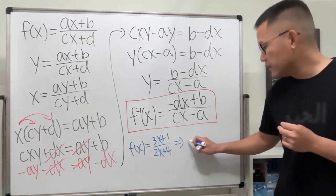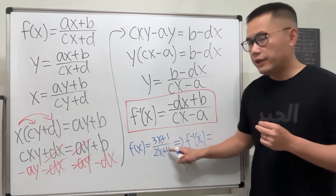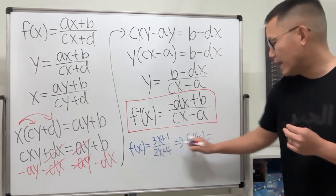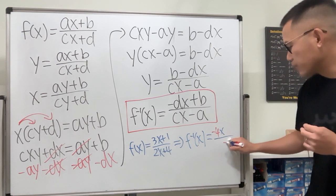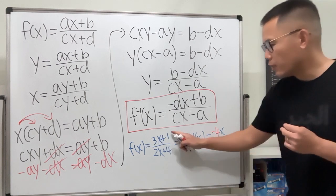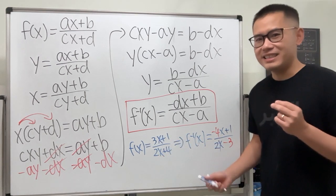This right here gives us f inverse being equal to, you switch 3 and 4 and make them negative. So you will have negative 4x, and then this right here should be a minus 3. And then the 1 and 2x stays the same. So plus 1 and 2x. Just like that.